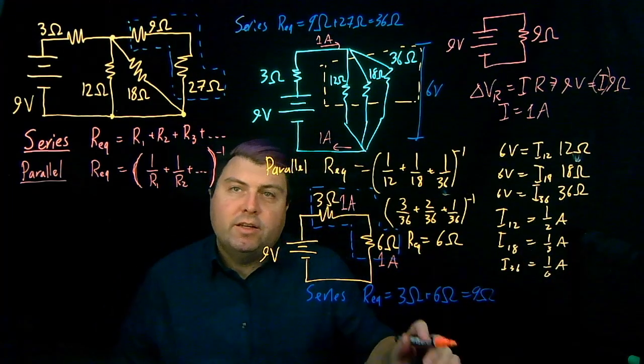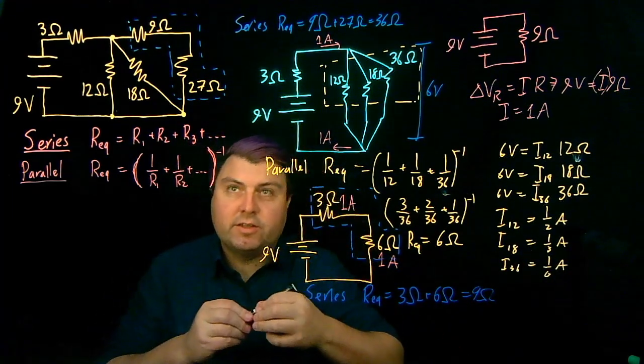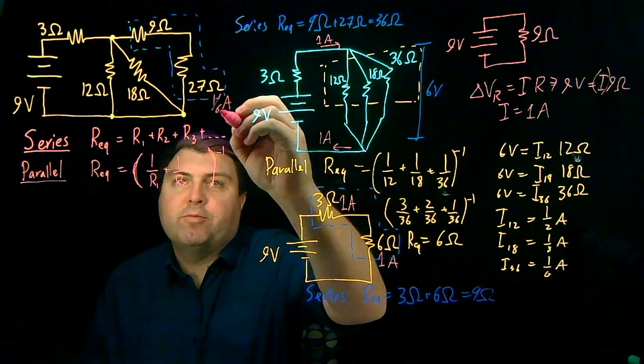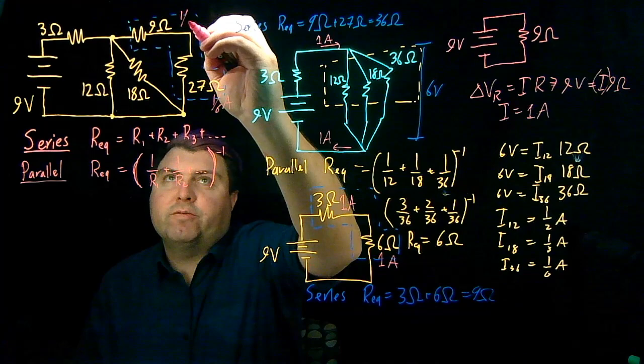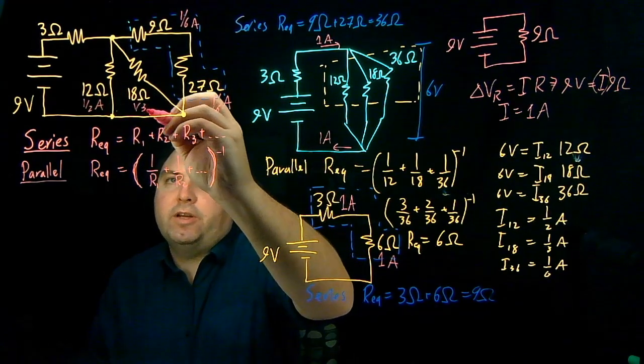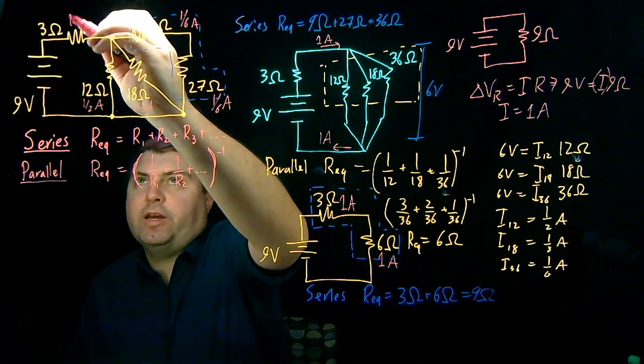What that means then is that this 27 ohm is going to have 1 sixth of an amp, but it's in series with this. This will also be 1 sixth of an amp. This is 1 half an amp. This is 1 third an amp. This is 1 amp.